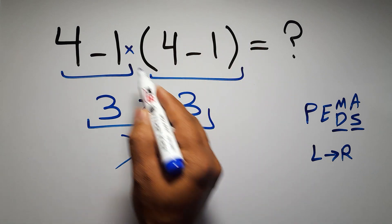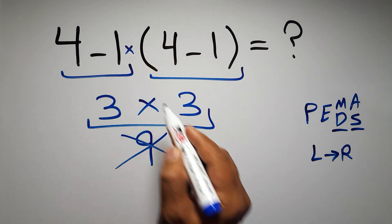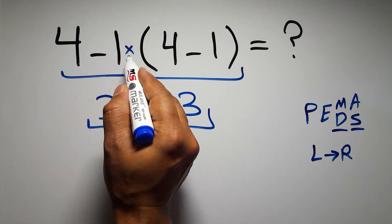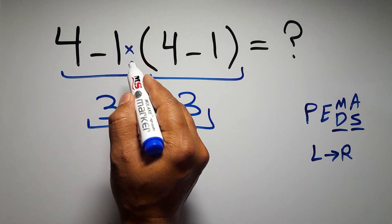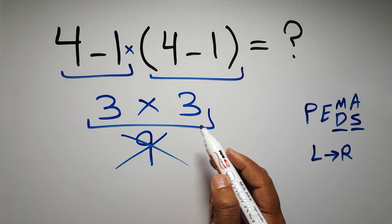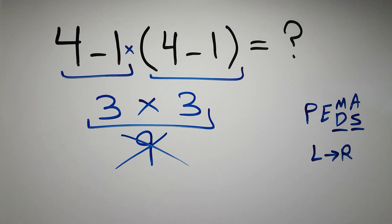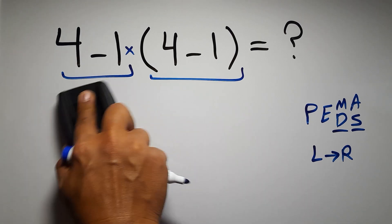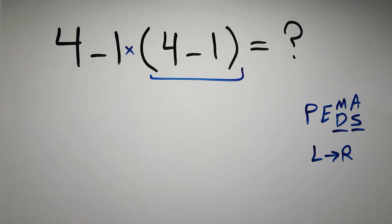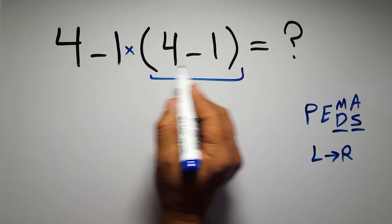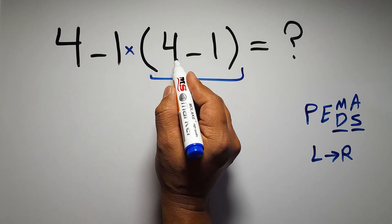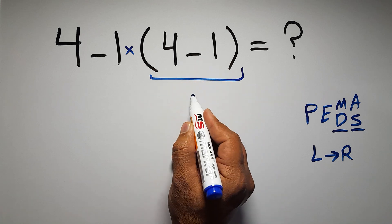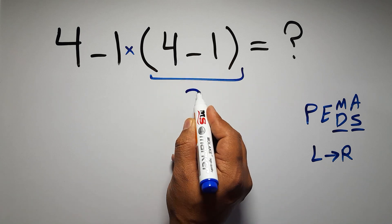do the parentheses first, then the multiplication, and finally the subtraction. If we do the subtraction before the multiplication or the parentheses, it is wrong. So first, inside the parentheses we have four minus one which gives us three.